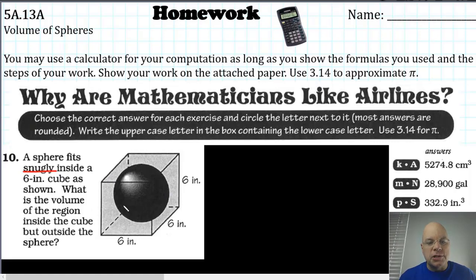So for this sphere to fit snugly inside the cube, it means the width of the cube or any side length of the cube is equal to the diameter of the sphere. And so if the side length of the cube is six, the radius of the sphere must be three. So really what this problem comes down to is volume of the cube minus volume of the sphere.